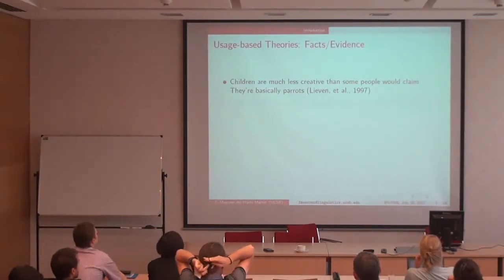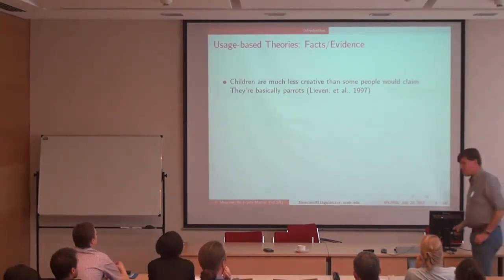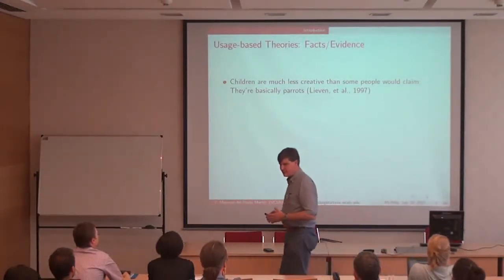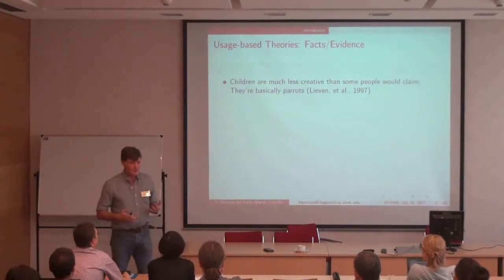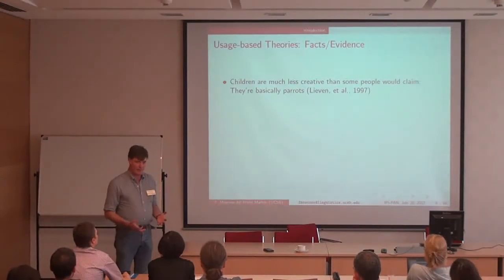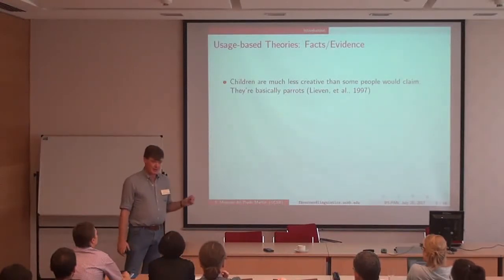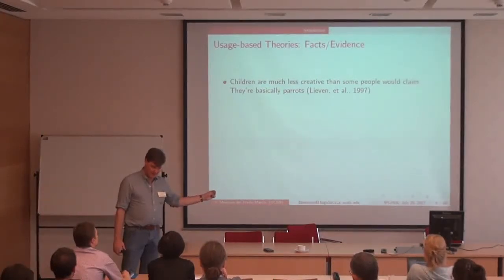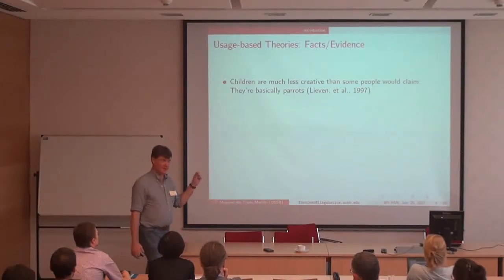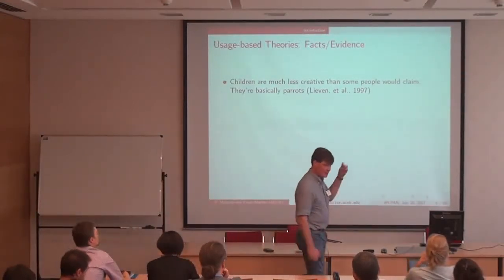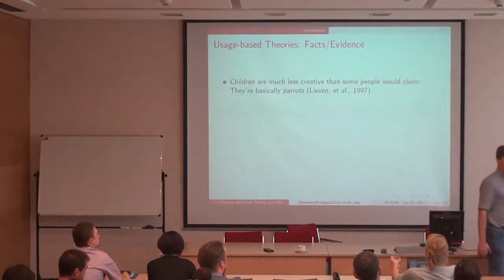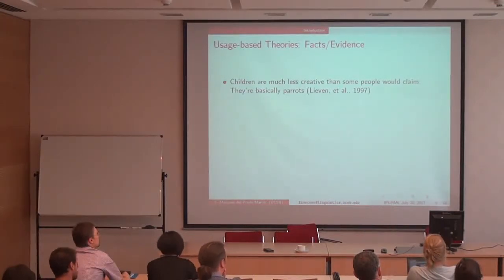As opposed to what many people have said, if you read Pinker you believe that children are geniuses, but in reality children are actually much less creative than generative linguists have told us. They are basically parrots. Tomasello and Elena Levin have shown that every single utterance a child produced until a certain age has literally and exactly been produced by their parents in the past. When Pinker tells us that children are very creative in the way they use rules, they are actually not generalizing that much — they are very much repeating what they've already heard.